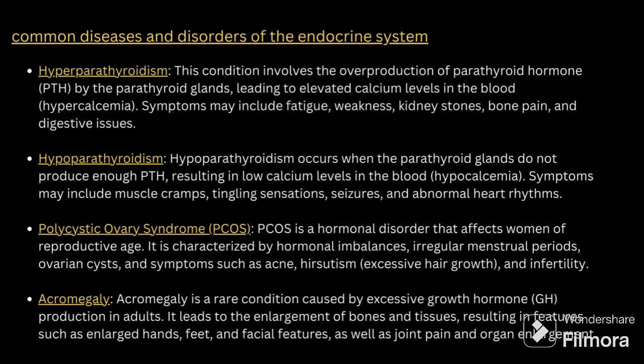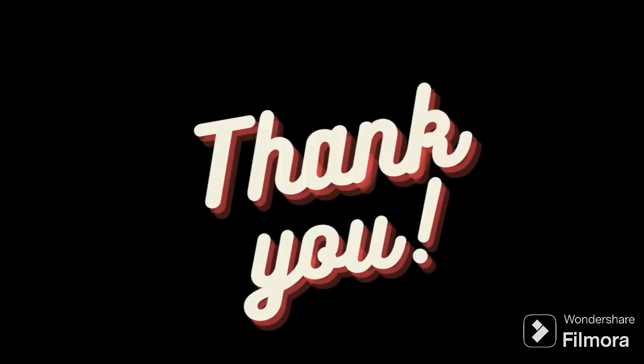Hypoparathyroidism occurs when the parathyroid glands do not produce enough parathyroid hormone, resulting in low calcium levels. Symptoms include muscle cramps, tingling sensation, seizures and abnormal heart rhythm. Polycystic ovary syndrome is a hormonal disorder affecting women of reproductive age, characterized by hormonal imbalance, irregular periods, ovarian cysts and symptoms such as acne, hirsutism — that is excessive hair growth — and infertility. Also go through what acromegaly is.